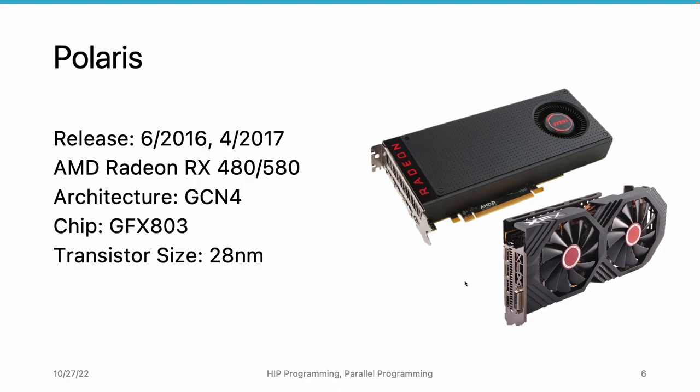GFX803 is still being used in the GCN4 architecture, so the chip has no major difference. But there are some other differences — for example, the memory technology is being upgraded in these GPU products. There are two GPU products in the Polaris series: RX480 and RX580. They are released about one year apart. The chip is still the same, and the transistor size is still 28nm technology.